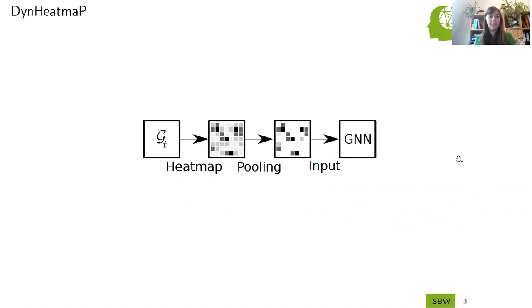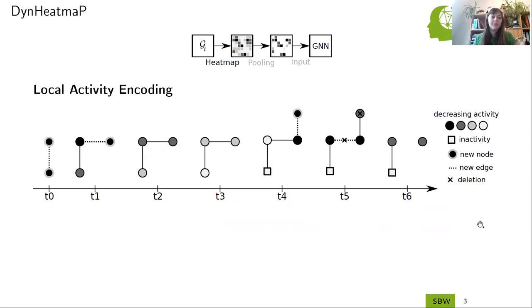Now let's have a deeper look into the two steps. When it comes to the heatmap generation, we want to encode the local activity of the nodes. Let's have a look at this example graph. At the first timestamp, T0, two nodes and an edge are added to the graph. This is when we would say both nodes are highly active. In the second timestamp, T1, a new node occurs, and the adjacent node and the node itself become highly active regarding additions. And on the other hand, if there are no incident activities happening, as for the bottom node, the activity decreases from time to time. We could also say that after a certain period, this node becomes inactive regarding additions. This is what I illustrated here with the square at timestamp four.